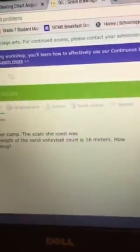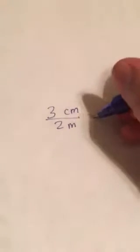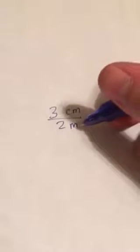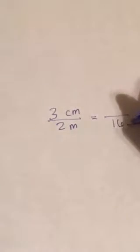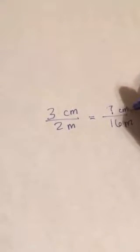The actual length of the volleyball court is 16, so that's meters. You would write it in your proportion where the meters are, which is in the denominator. So it was 16 meters, and you have to find out how many centimeters that would be.